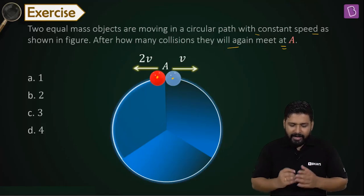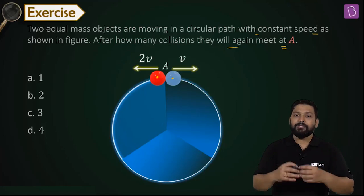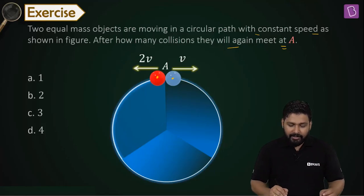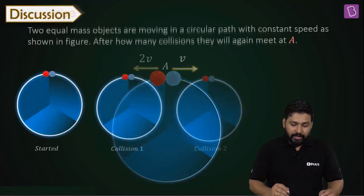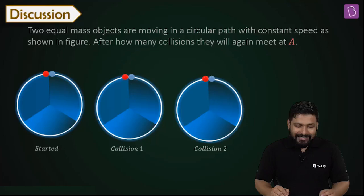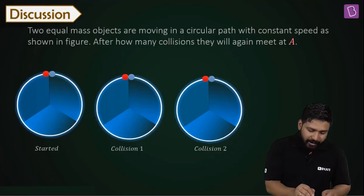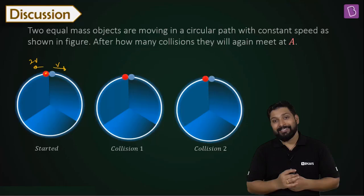Now, for a proper understanding, what I have done is, since the speed is 2V and V, I have divided the circle into three parts. Let's see what goes on. Once it is started, then what happens? This is traveling with 2V. This is traveling with V. Of course, this is with 2V. So this is going to cover a larger distance.